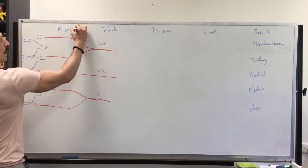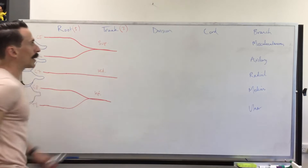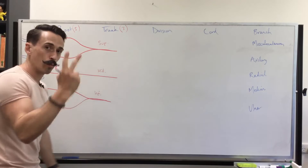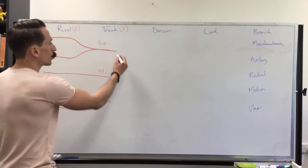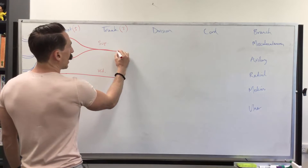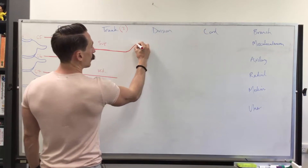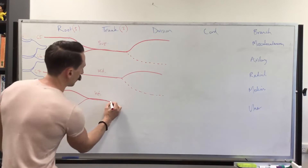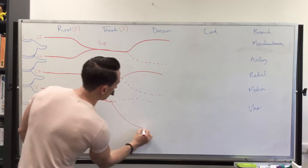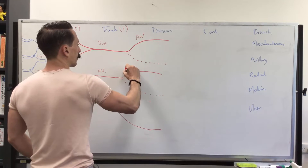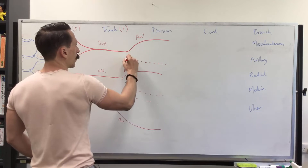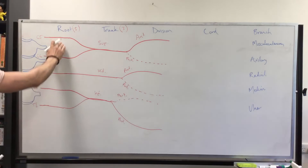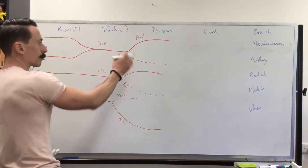There are five nerve roots and three trunks. Just like a normal tree, the trunk branches off, so each trunk has two divisions — one anterior and one posterior. I'll draw the anterior branch as a solid line and the posterior as a broken line. We end up with three anterior divisions and three posterior divisions — six divisions total.